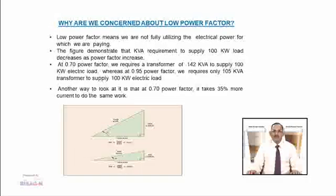Low power factor means we are not fully utilizing the electrical power for which we are paying. The figure demonstrates that the kVA requirement to supply 100 kW load decreases as power factor increases. At 0.70 power factor we require a transformer of 142 kVA to supply 100 kW of electric load, whereas at 0.95 power factor we require only a 105 kVA transformer. At 0.70 power factor it takes 35% more current to do the same work.